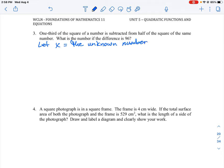Then it says one-third of the square of the number is subtracted from half the square of the same number. So the way we interpret that mathematically is we take half of the square of a number, and then we subtract from the one-half square a third of the square of the number, and that difference is equal to 96. This is what the equation looks like when we translate that sentence into math.